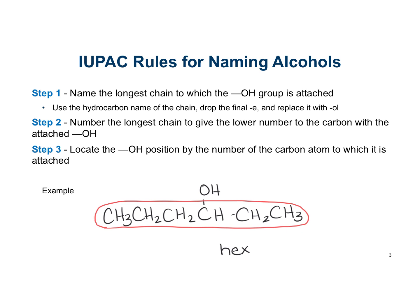We are going to use the alkane name hexane, and we are going to drop the E and instead add OL. So that becomes hexanol as the base name. Then we're going to number the longest chain to give the lower number to the carbon that's attached to the OH - we number from the side that's closest to that OH functional group.